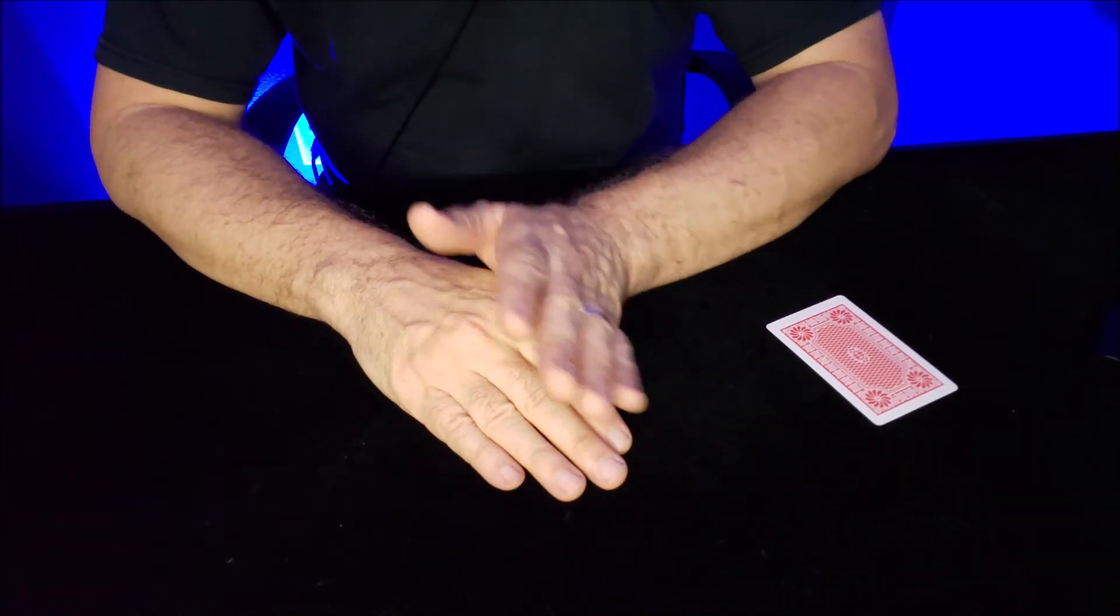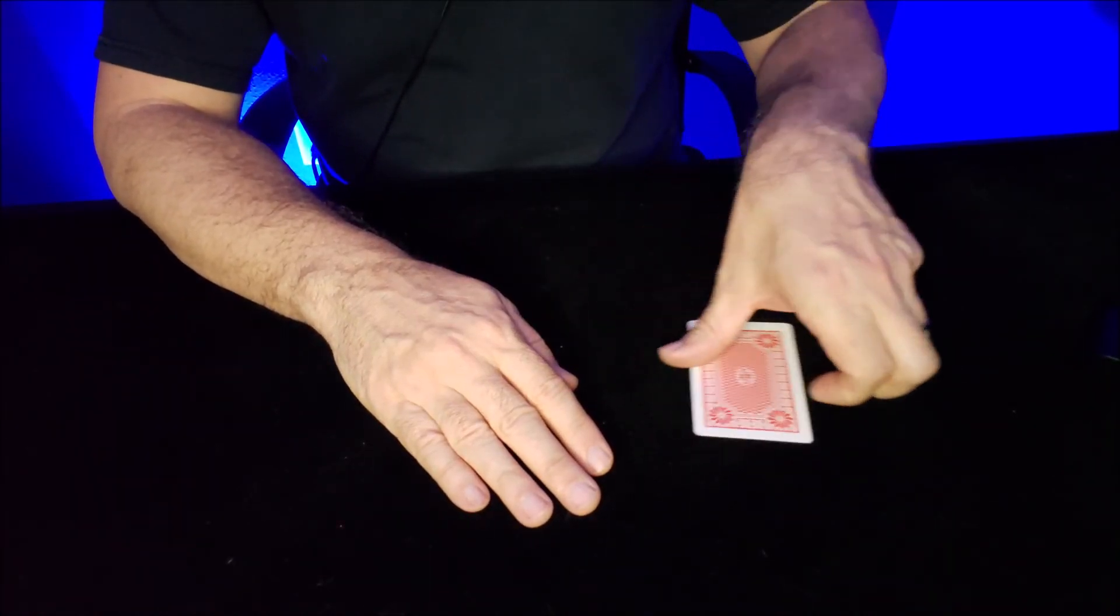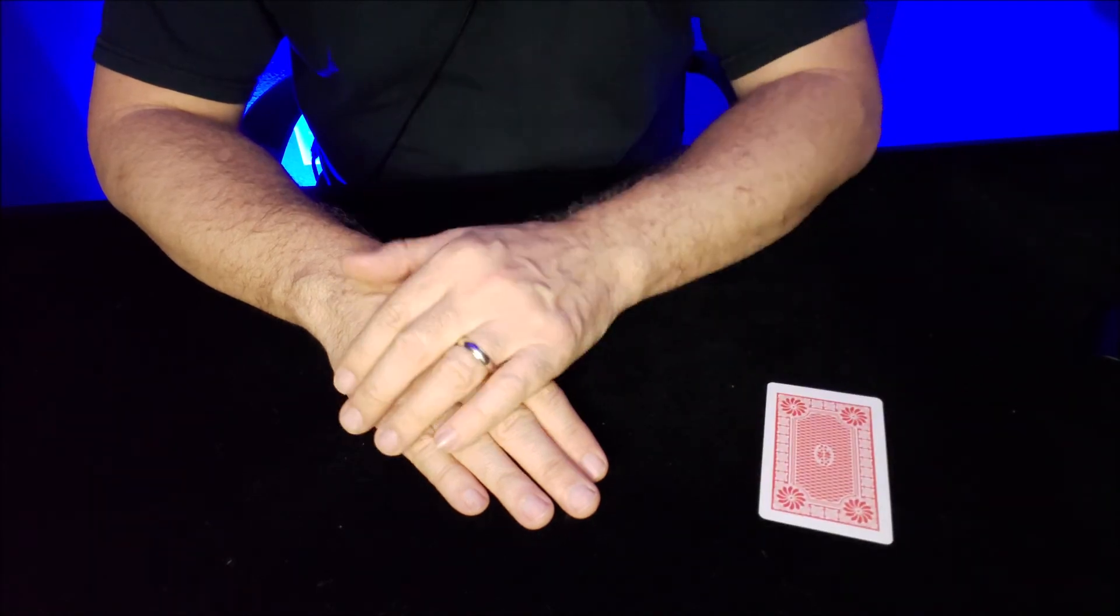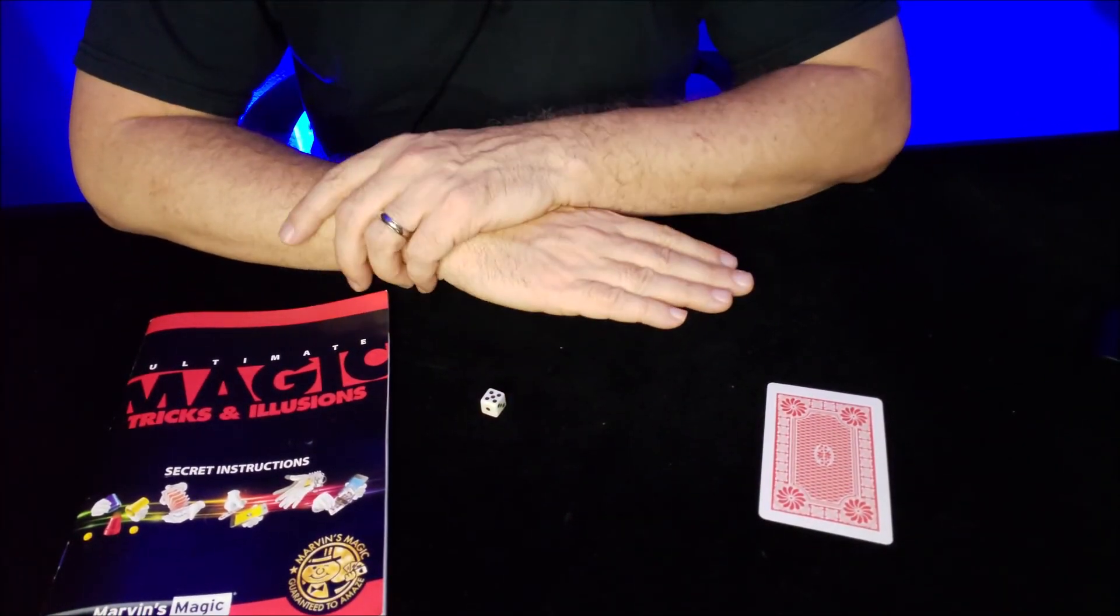They'll be thinking of seven, and you can just pretend that you're reading their mind and then reveal, 'You were thinking of seven, too.' That is the Quick Die Trick. I hope you have a lot of fun with that.